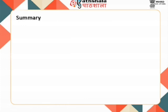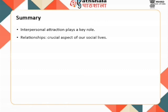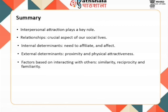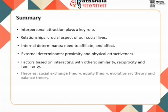To summarize what we have learned in this module: human beings are social animals and forming and maintaining relationships with others is a very crucial aspect of our social lives. Interpersonal attraction plays a key role in relationship formation. The main internal determinants are the need to affiliate and affect. The external determinants are proximity and physical attractiveness. The factors based on interaction with others are similarity, reciprocity, and familiarity. The main theories include social exchange theory, equity theory, evolutionary theory, and balance theory.